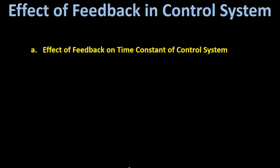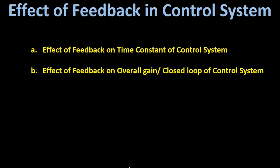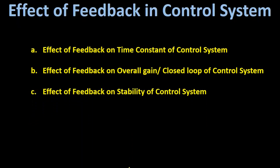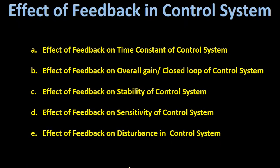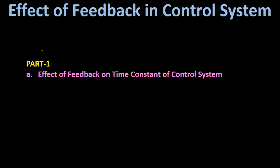In this lecture series we are discussing the effect of feedback in control systems. This topic has five parts: first, effect of feedback on time constant; second, effect on overall gain or closed loop gain; third, effect on stability; fourth, effect on sensitivity; and fifth, effect on disturbance in the control system.